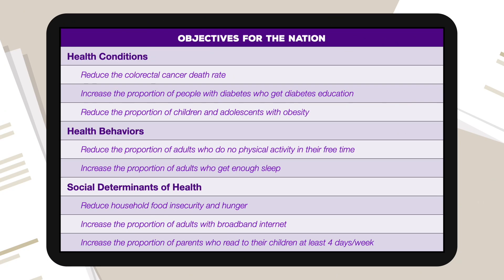Here are some examples of objectives for Healthy People 2030. Under health conditions, we have reduced the colorectal cancer death rate, increased the proportion of people with diabetes who get diabetes education, and reduced the proportion of children and adolescents with obesity. Under health behaviors, we have reduced the proportion of adults who do no physical activity in their free time, and increased the proportion of adults who get enough sleep. Under social determinants of health, we have reduced household food insecurity and hunger, increased the proportion of adults with broadband internet, and increased the proportion of parents who read to their children at least four days per week.